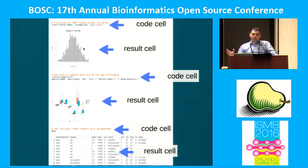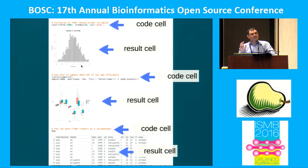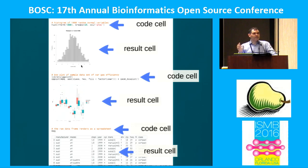Some notebooks support polyglot programming — multiple languages in the same notebook — so you'll have different cells, for instance Python here and R there. But you'll never see different languages in the same cell. Notebooks cannot do that because at the end of the day everything is based on compiler technology, and this technology does not support composable languages. Today I'll show you something that does.